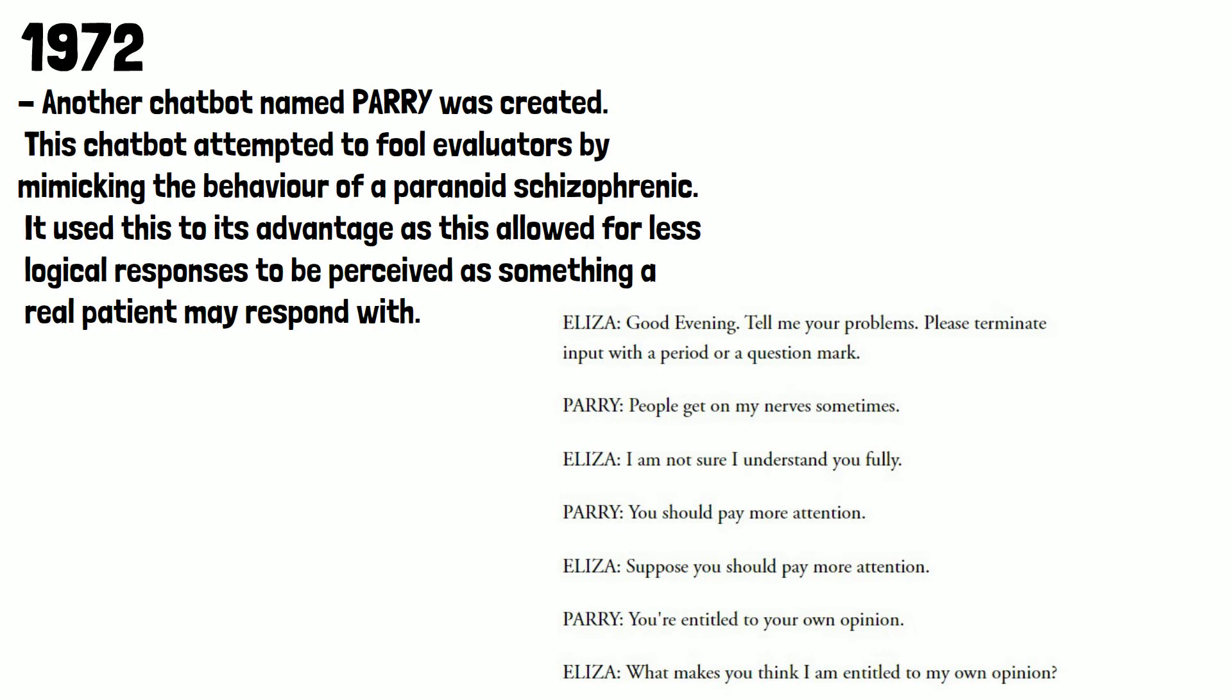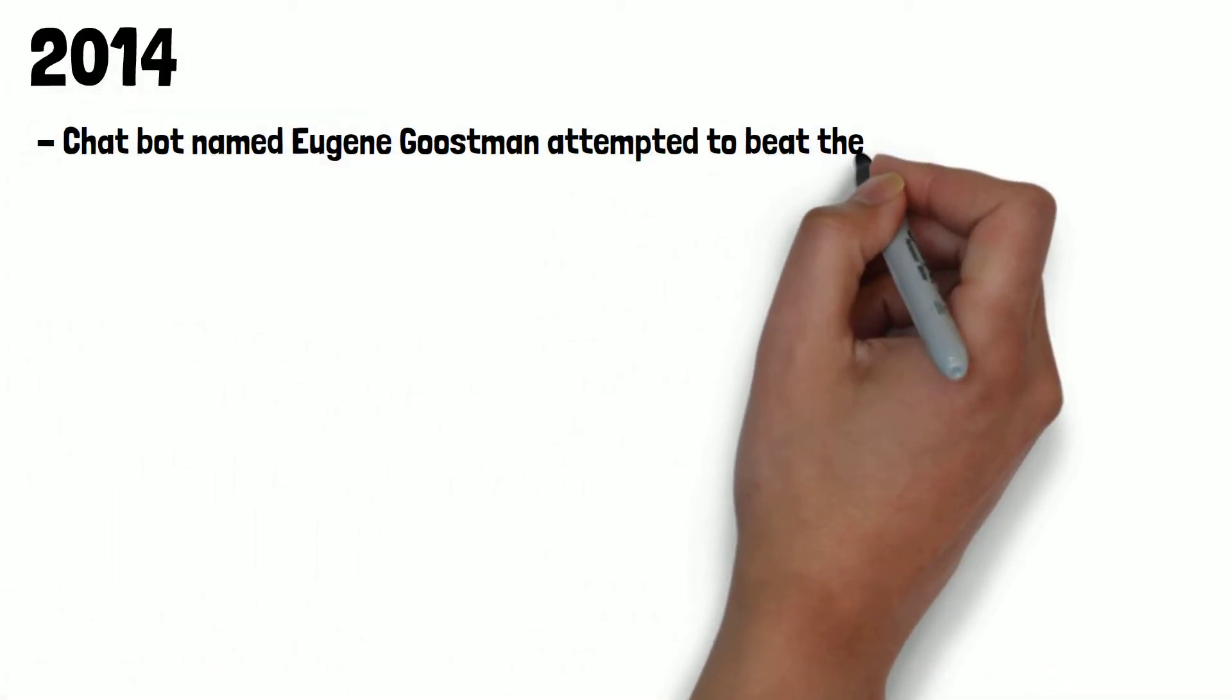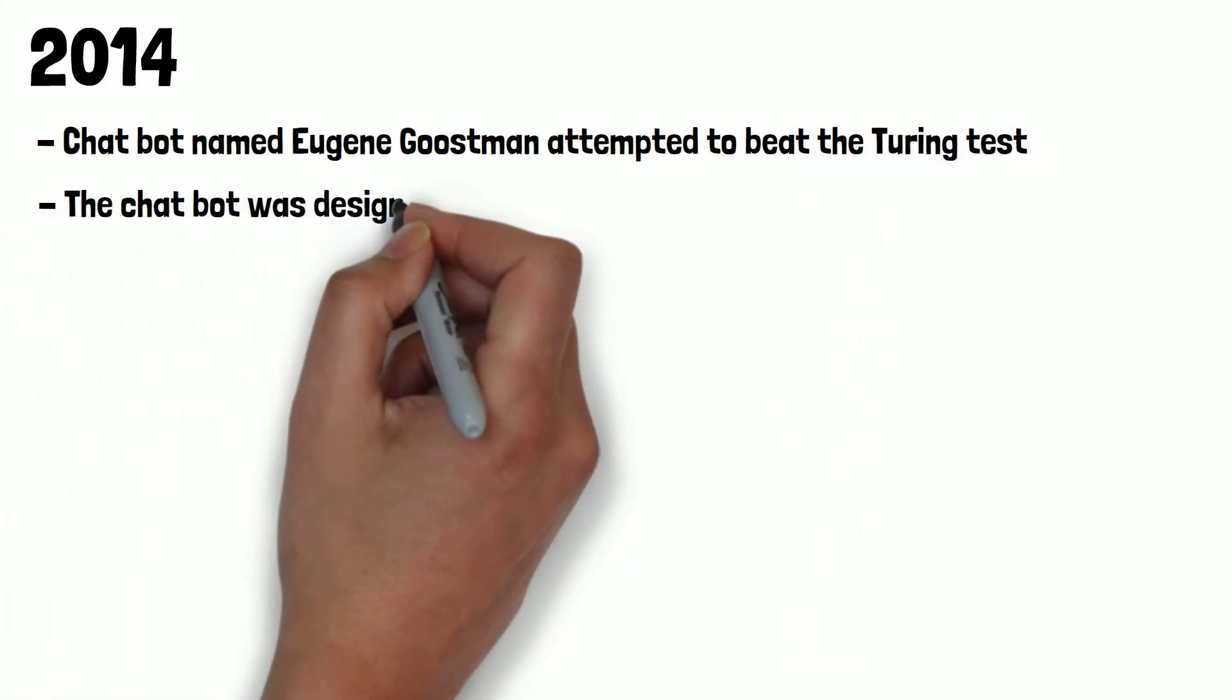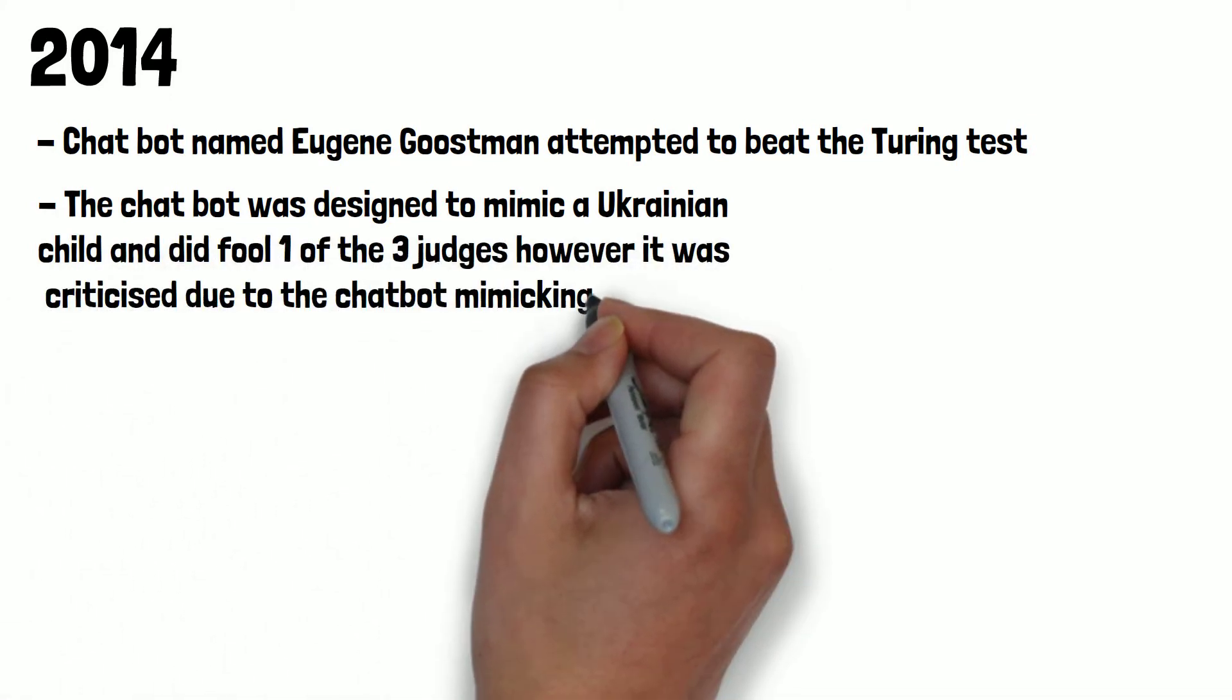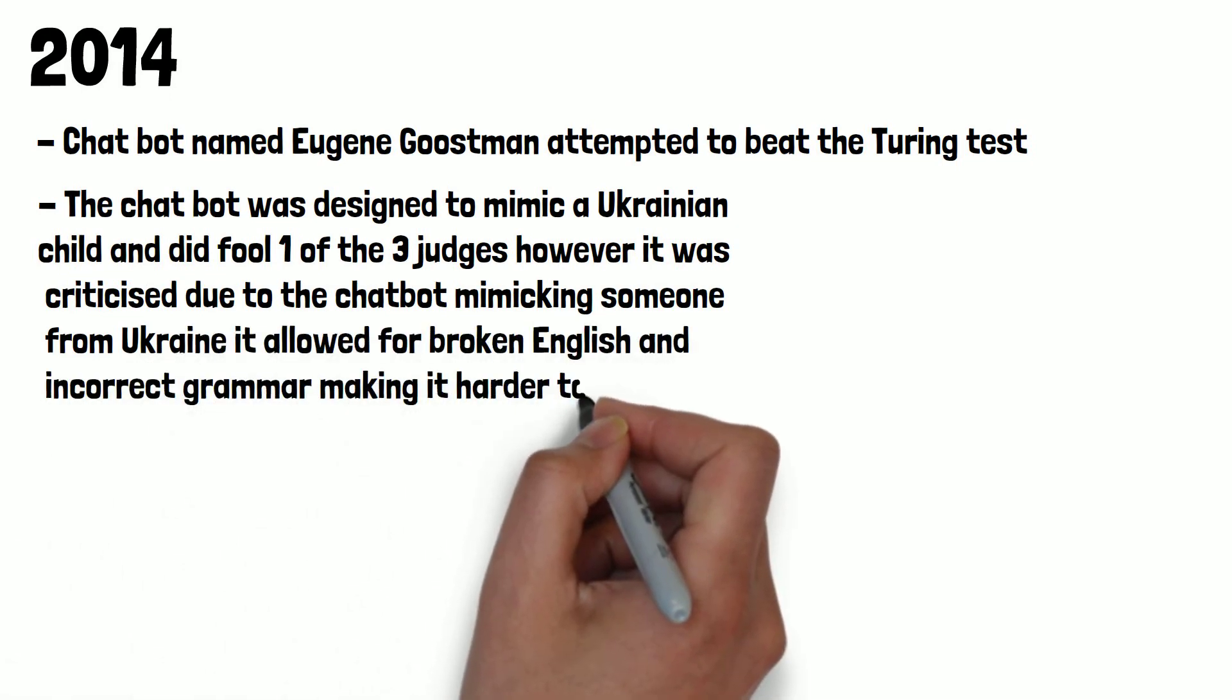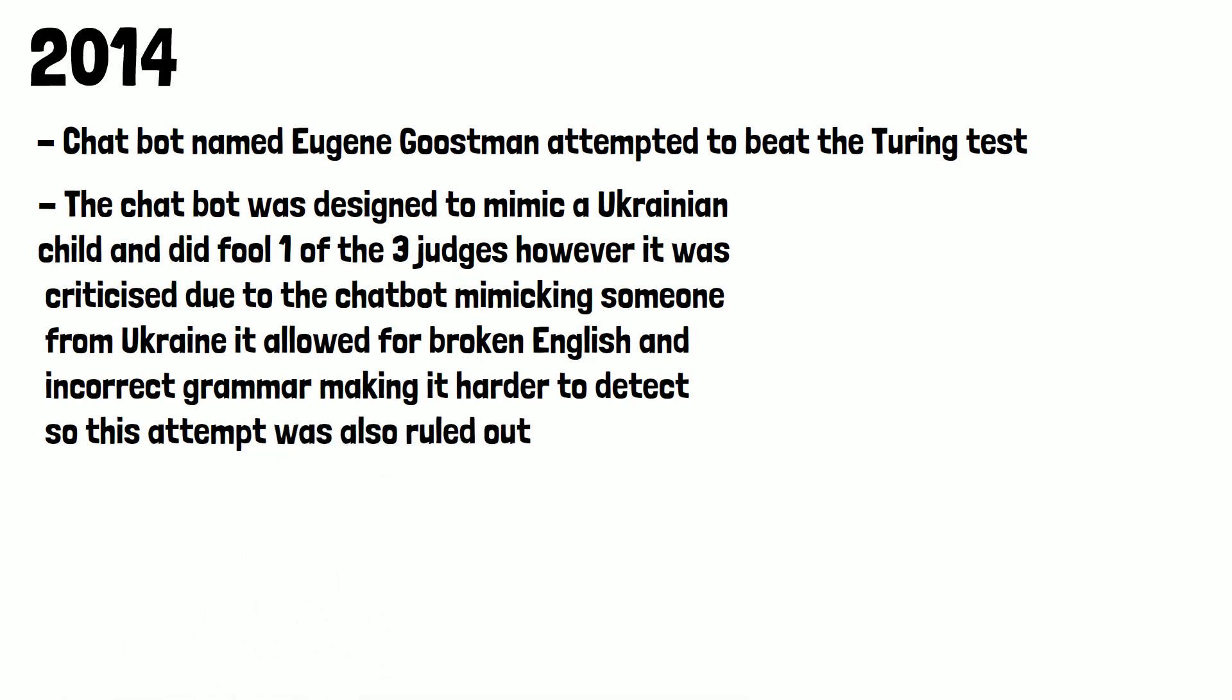The most recent attempt to pass the Turing test was in 2014, when a chatbot named Eugene Goostman attempted to beat the Turing test. The chatbot was designed to mimic a Ukrainian child and did fool one of the three judges. However, it was heavily criticized due to the chatbot mimicking someone from Ukraine. It allowed for broken English and incorrect grammar, making it harder to detect, so this attempt was also ruled out.